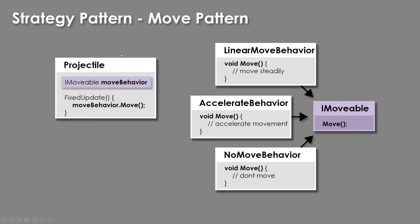The second example we'll look at is using the strategy pattern for projectile movement. We're going to define an interface called iMovable, and on this interface, all objects that implement it will need to also implement move and define what the move function will do. Then we'll have a projectile that will keep track of a movable behavior called move behavior, and we'll look at an example of how to swap those out at runtime.